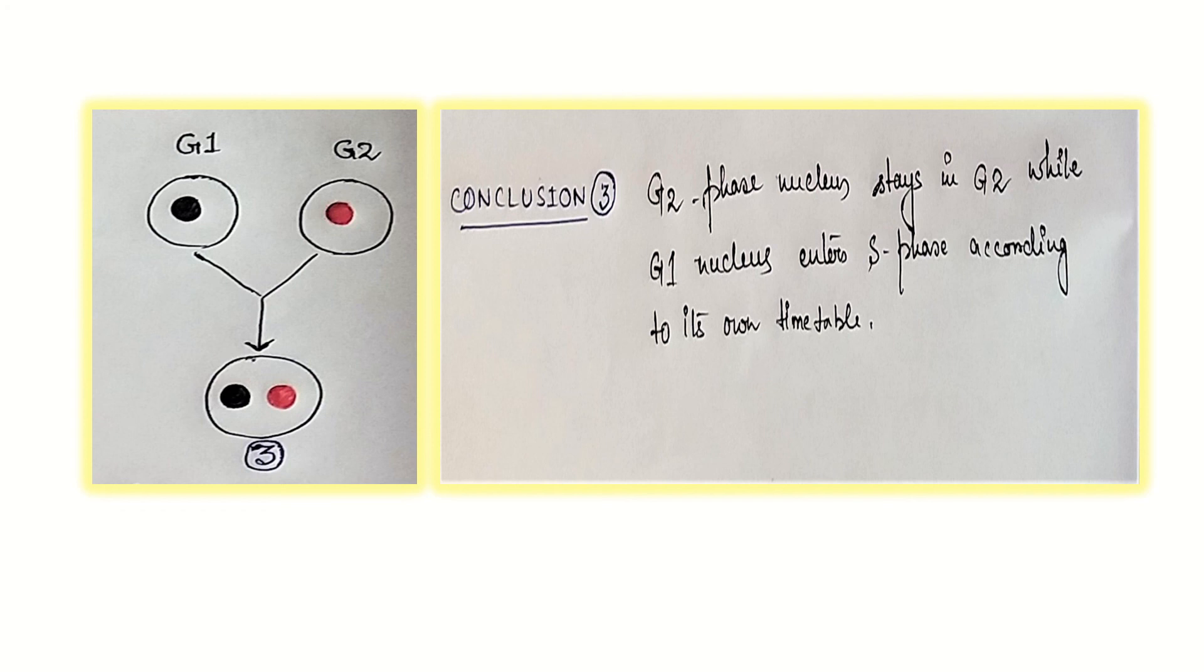We can say that G2 phase nucleus stays in G2 while G1 nucleus enters S phase according to its own timetable. That means none of the nuclei are influencing each other. G1 goes in its own path following its own timetable and cycle. And G2 is also maintaining its own status.